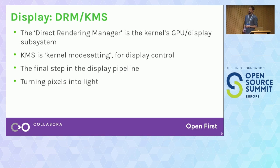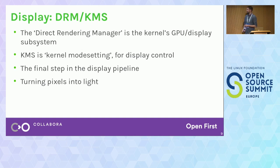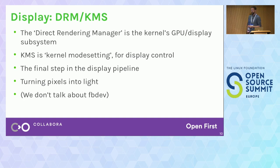Starting with the display side: DRM is the Direct Rendering Manager subsystem in the Linux kernel — it covers both GPU and display. DRM is the overarching driver framework and set of drivers. Kernel Mode Setting is the part specifically related to the display pipeline — it's the final step of turning pixels into light. KMS has nothing to do with 3D rendering or where windows are positioned; it's just turning memory bits into electrons. Some people will tell you fbdev can be used for display as well and has historically been used.